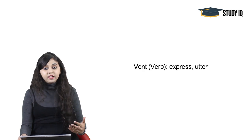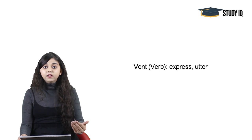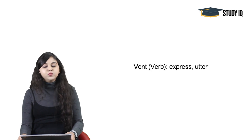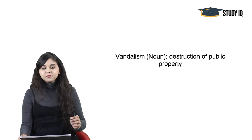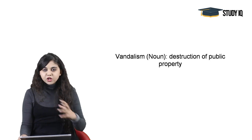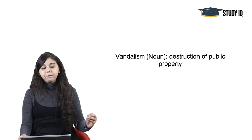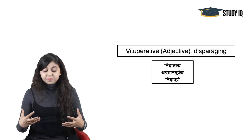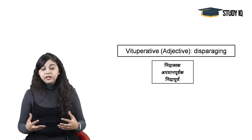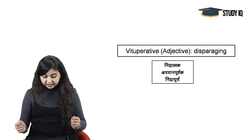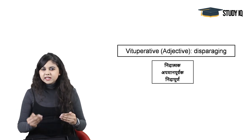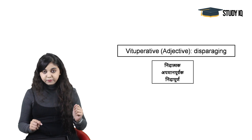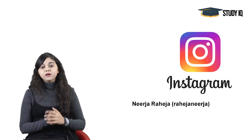Vent — ka arth hai express karna, kisi ko batana. Venting your anger means trying to express or utter your feelings — that is when we use the verb vent. Vandalism — ka arth hota hai destroy kar dena, bilkul naash kar dena — destruction of public property is called vandalism. Vituperative — ka arth hota hai disparaging, something jo bohut apmaan-janak hai. Aap criticize kar rahe hain, censure kar rahe hain kisi ko — that is when we use the adjective vituperative.